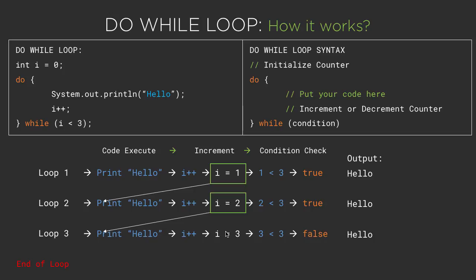This time at the end when we check our condition, 3 is smaller than 3 comes out to be false. At the end of loop 3, i equal to 3 makes our condition false. Once the condition is false, the loop terminates immediately — there is no scope for loop 4 to start. So we had 3 loops and 3 output statements: hello, hello, and hello. We should use the do-while loop when we are sure that we need to execute our code at least once, no matter what the condition is. Always remember that.